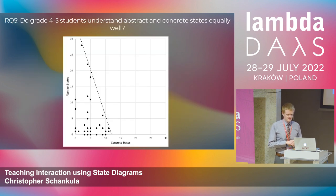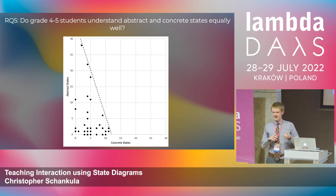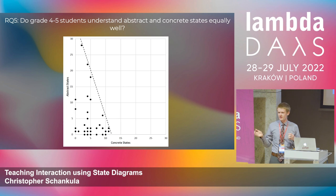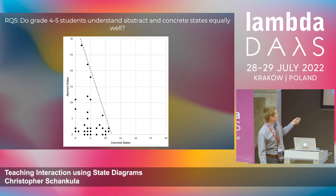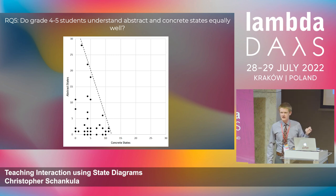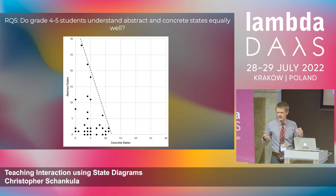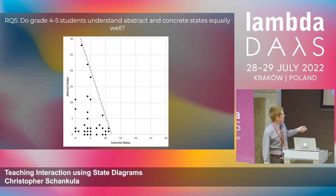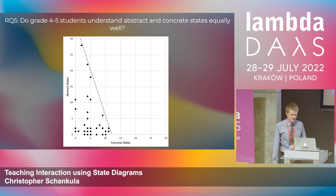The next question was the idea of abstract versus concrete states. We analyzed their diagrams by hand and figured out how many concrete and abstract states there were. The groups that kept working on their game generally got into more abstract states — by abstract I mean things like using states to represent how much health their character had. We put a line at roughly three times as many abstract states as concrete states, and interestingly, none of the groups seemed to go past that line.